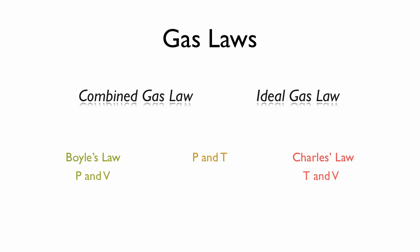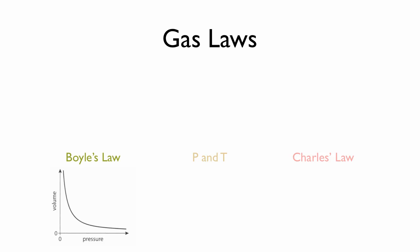A graph for Boyle's law, which you've probably seen before, looks like this. Unless we graph pressure against 1 over volume, in which case we get a straight line. This is because pressure and volume have an inverse relationship.